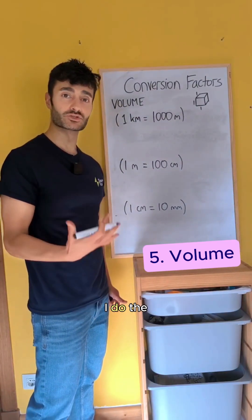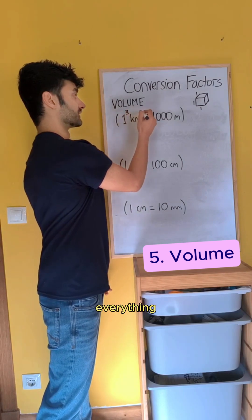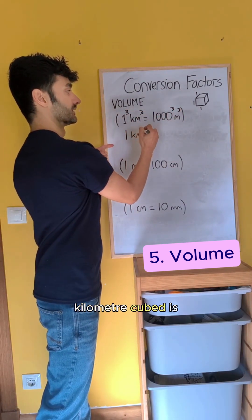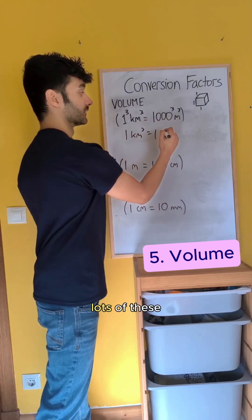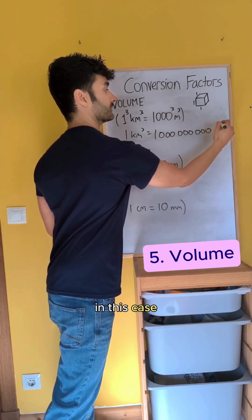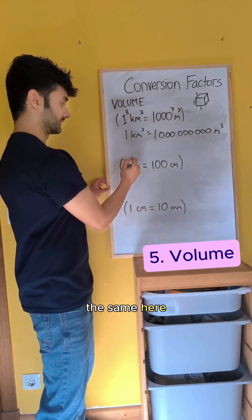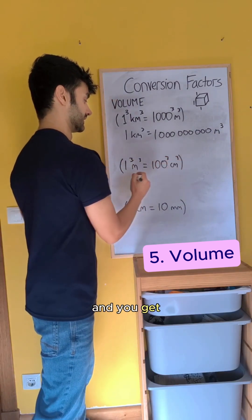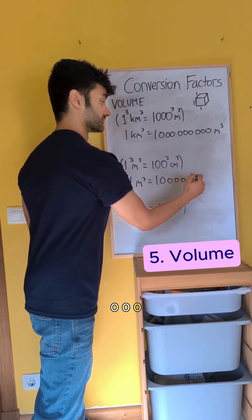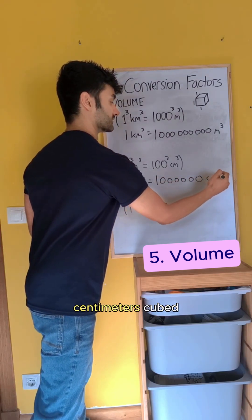Volume scale factors, I do the same trick, but you cube everything this time to get that one kilometer cubed is equal to, and you write three lots of these zeros out to get a billion, in this case, meters cubed. The same here. Cube everything and you get that one meter cubed is one zero zero zero zero zero zero million centimeters cubed.